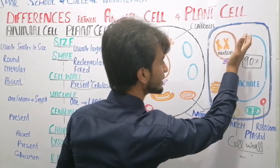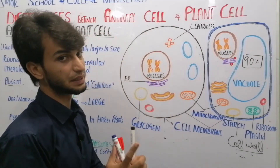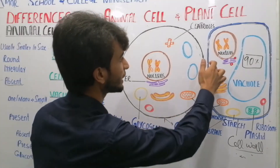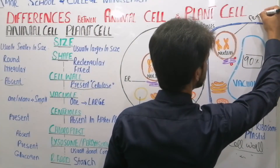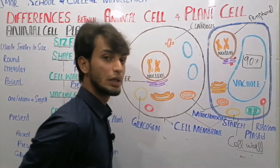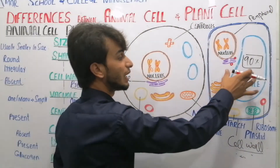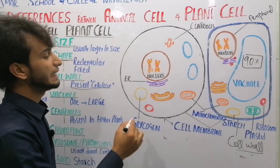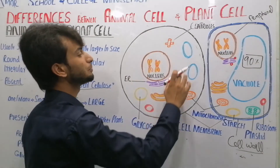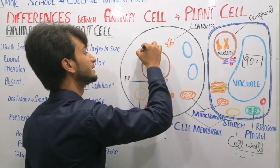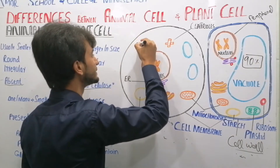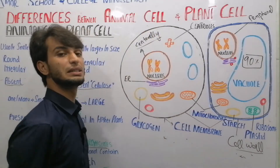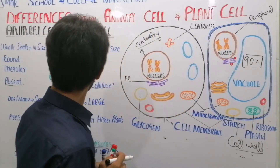Because of the large vacuole in plant cells, the position of the nucleus in plant cells is peripheral. This is also a difference — the position of the nucleus. In plant cells, the nucleus position is peripheral because the large vacuole pushes it to the side. But in animal cells, due to the presence of small vacuoles, the location of the nucleus is usually centrally positioned.